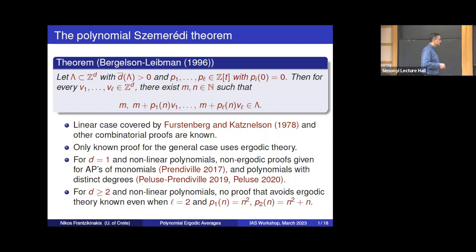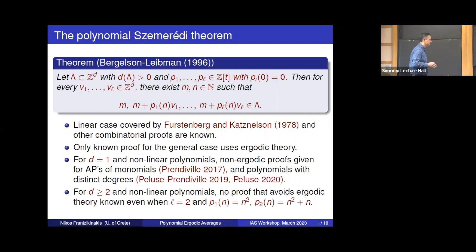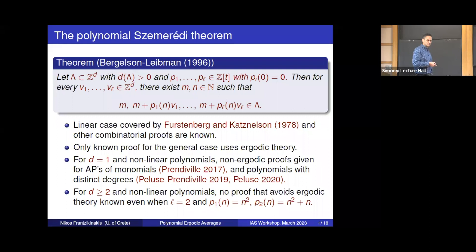Prendiville covers the case n, n², and Peluse's more recent work covers distinct degrees. That's about all I know regarding good quantitative bounds with proofs avoiding ergodic theory. In dimension two, I don't know of any non-linear result — even for very simple polynomials like n² and n²+n, there is no known argument, perhaps even for d equal to one.